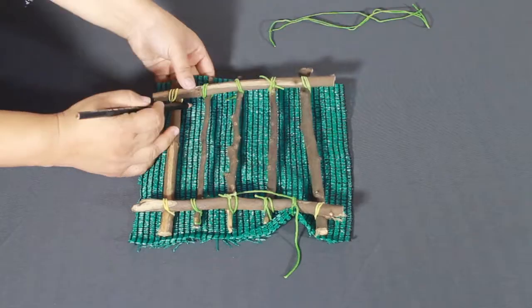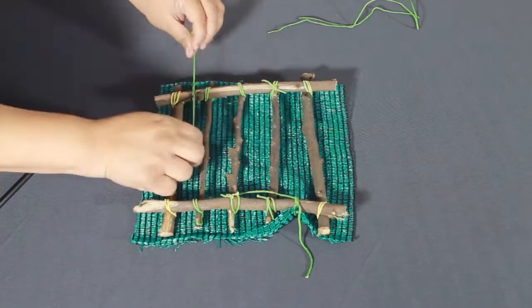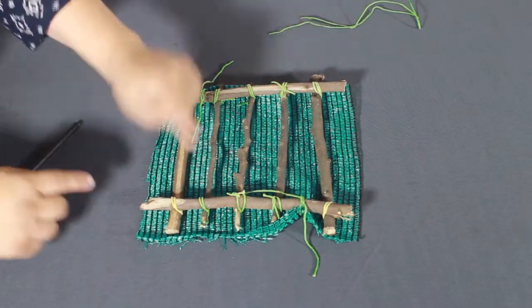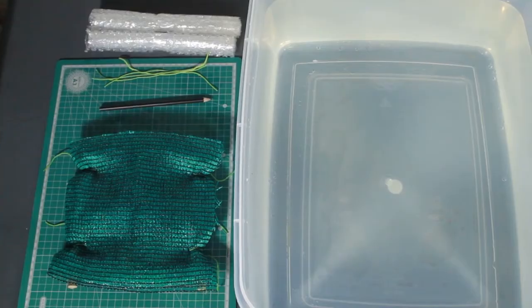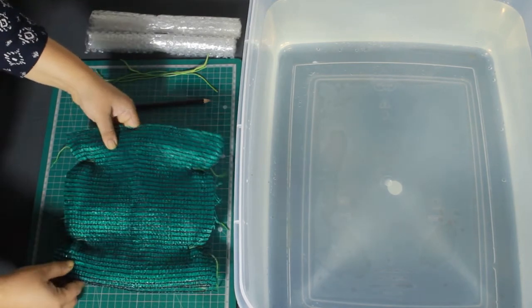Poke the net with a pencil tip to make a small hole and weave a string across the net and the frame. Tie it securely. Repeat this on all four sides. Our floating raft with the net is now ready.